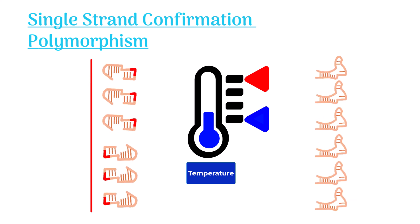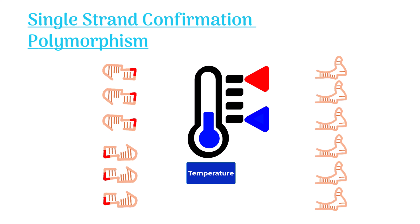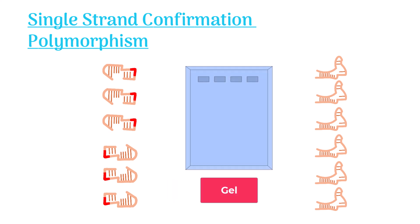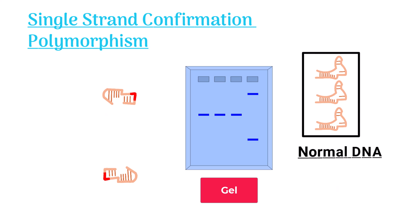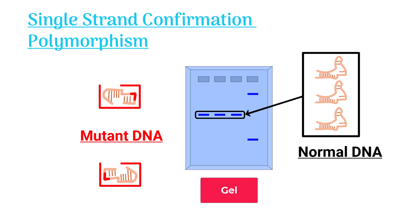Notice, the DNA strands with errors twist and bend differently than other strands. We separate these folded DNA molecules by gel electrophoresis. Normal DNA strands move in the same way through the gel, but the mutant DNA strands move differently. This difference in bending patterns confirms the presence of mutation in the original DNA.